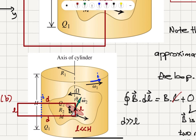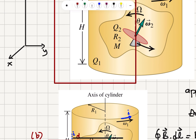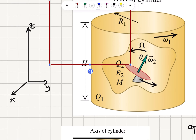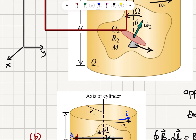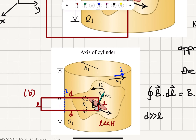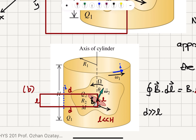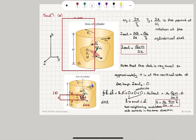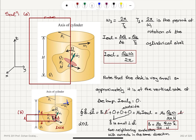Let's confirm the direction: with x, y, z axes defined, the magnetic field is in the plus k-hat direction. Using the right-hand rule — four fingers of the right hand curling in the direction of the current, the thumb points upward — the magnetic field is in the k-hat direction, confirming our result.